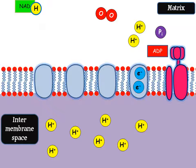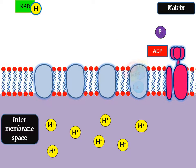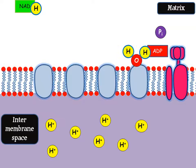The electrons cannot be left in the electron transport chain, so they are combined with hydrogen ions to make hydrogen atoms. An oxygen atom is also used, and the two hydrogen atoms and one oxygen atom are joined together to form water, which is one of the products of aerobic respiration.